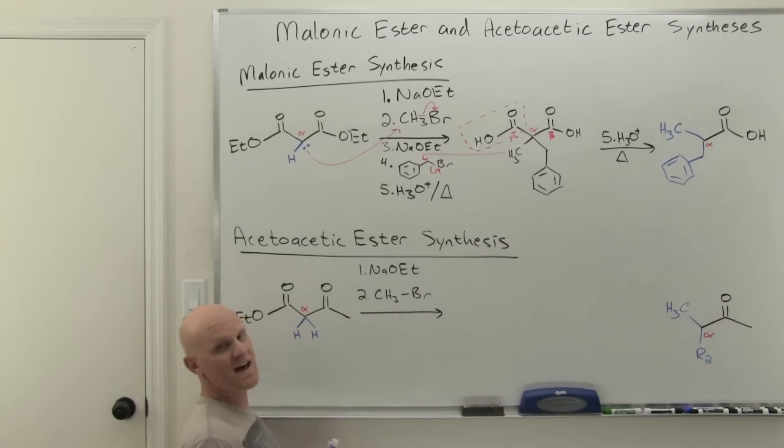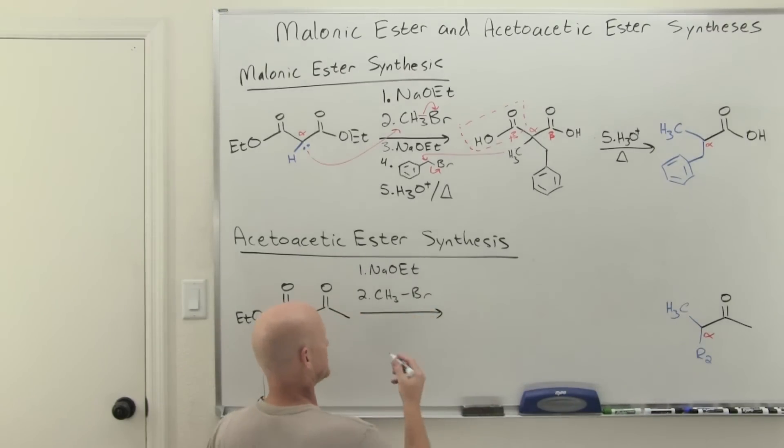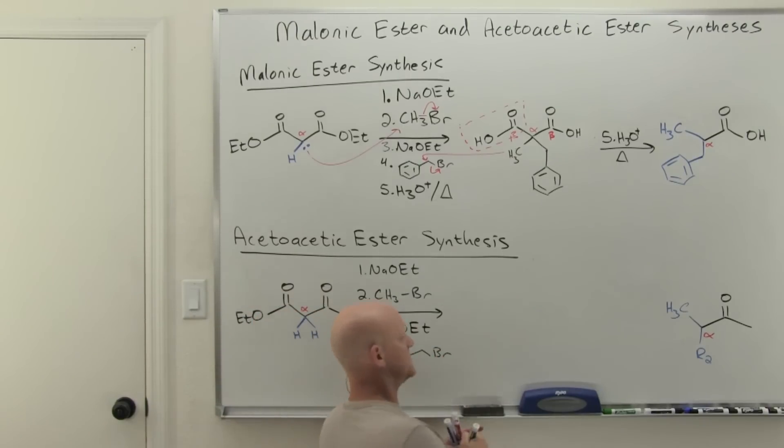And if we want to stop there, we could just add H3O plus and this guy would not exist. That'd just be another hydrogen still. But if we want to add another alkyl group, we can, we just got to add another equivalent of sodium ethoxide. And once again, I'm going to use phenyl, I'm sorry, benzyl bromide, which means that R2 in the final result is once again, a benzyl group.